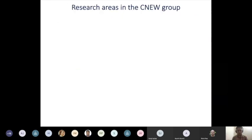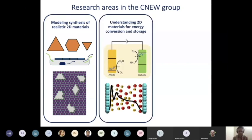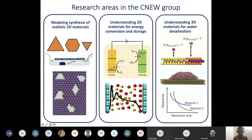The research areas in our research group would be broadly into three parts. The first would be modeling the synthesis of realistic 2D materials, which means different shapes, sizes, and different crystallographic orientations of the material. We want to understand 2D materials for energy conversion and storage. For example, this is a schematic of an electrochemical reactor to produce ammonia. Rather than using the Haber-Bosch process, we might use electrochemical methods. The third thrust is understanding two-dimensional nanomaterials for water desalination applications.